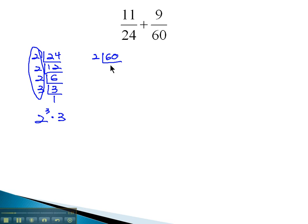Similarly, with 60, 2 goes into 60, 30 times, which is divisible by 3, 10 times, which is divisible by 2, 5 times, which is divisible by 5 once. The order doesn't matter that we divide them out. So we've got two 2's in there. So we'll say 2 squared times 3 times 5.